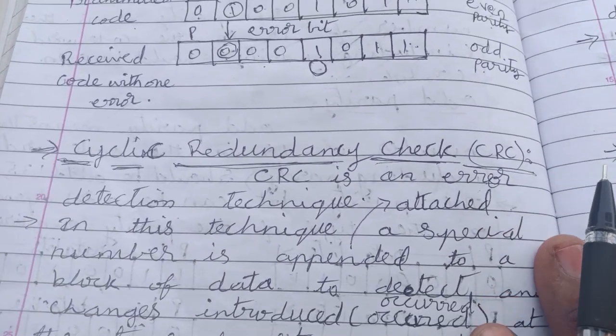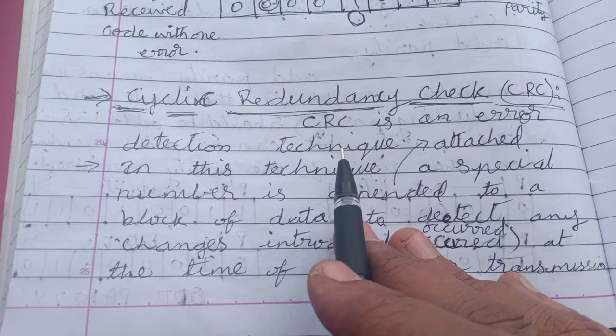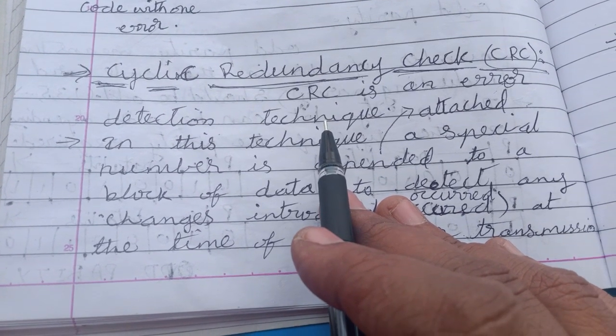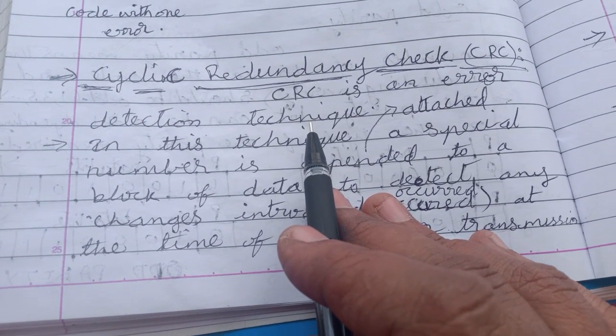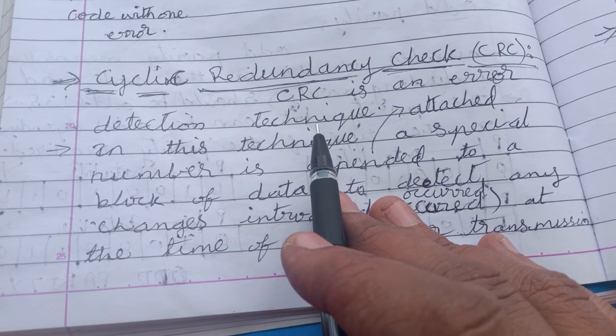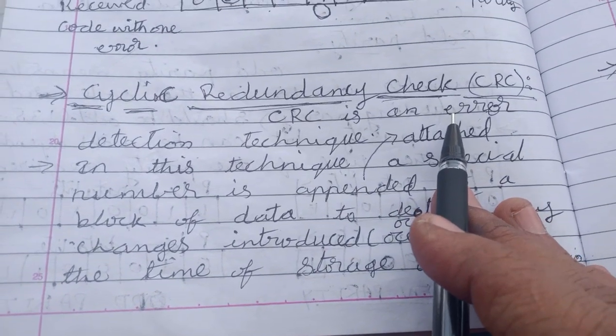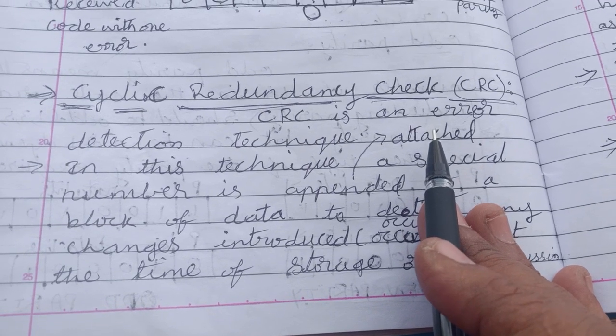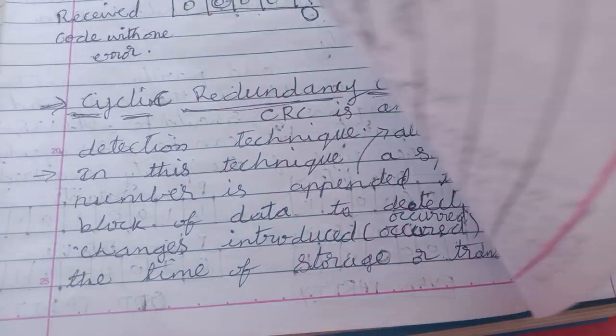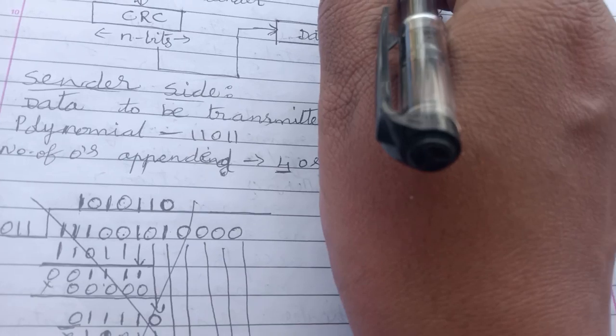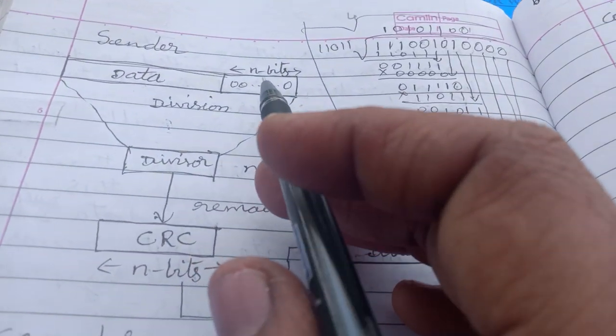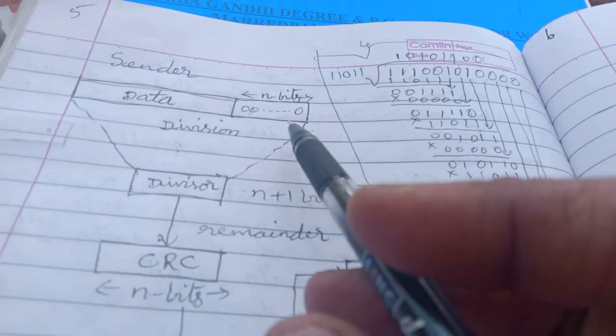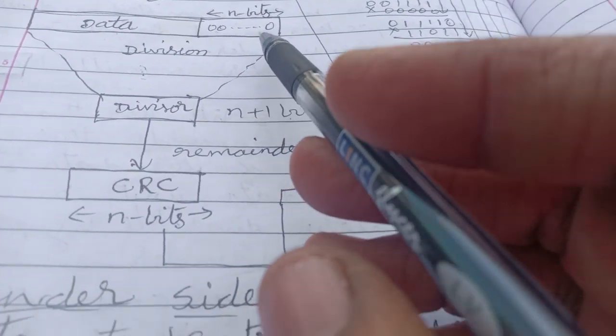In this cyclic redundancy check method, first the information is converted into the form of ones and zeros by using proper techniques. Analog information is converted into digital. Then at the sender side, before transmitting the data, the digital data to be transmitted is appended with a group of bits to detect the error.